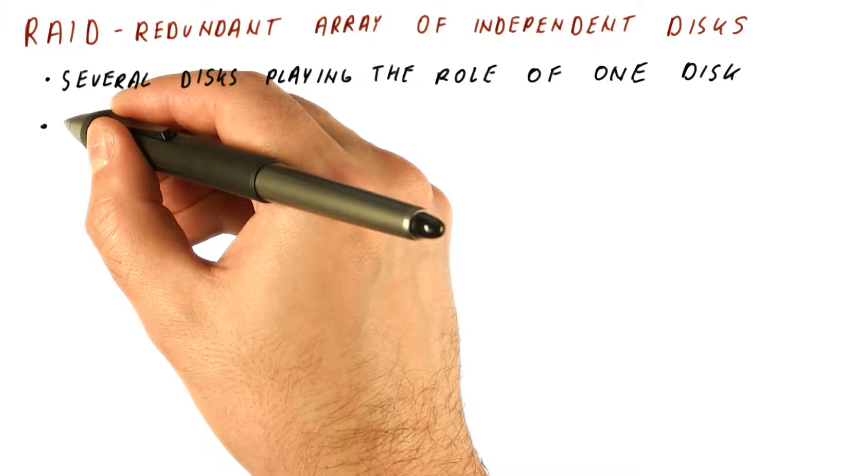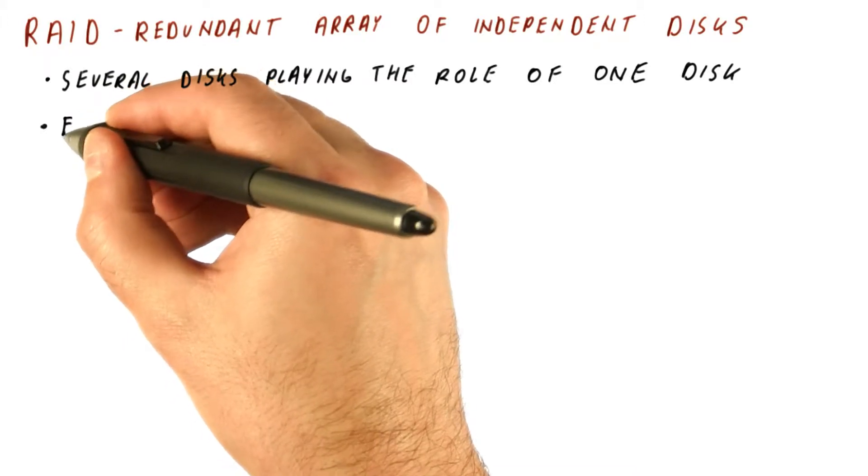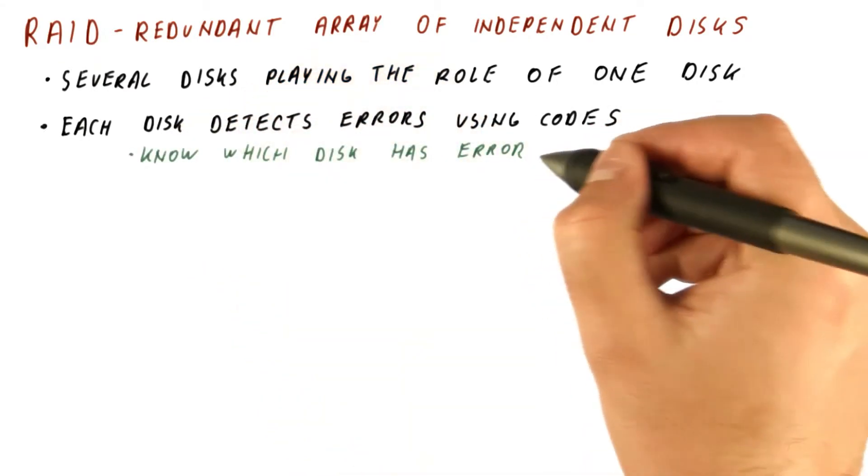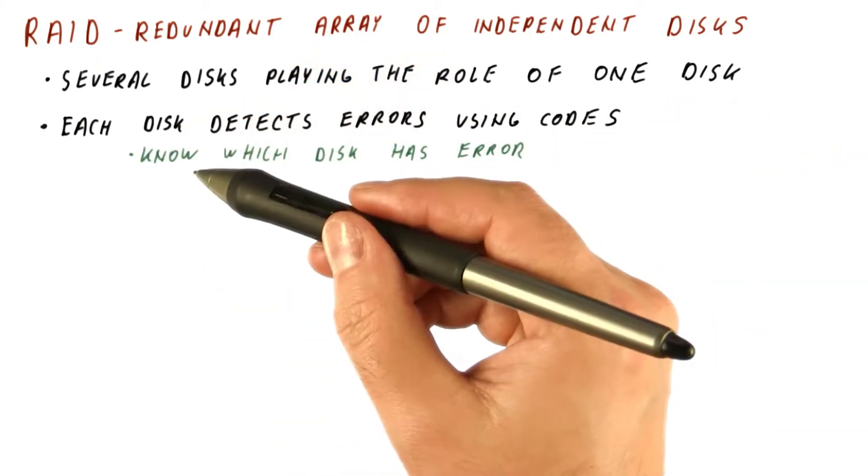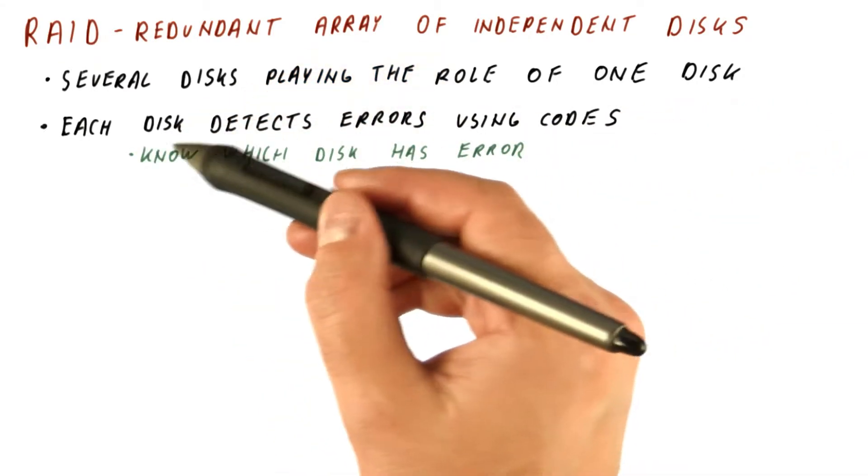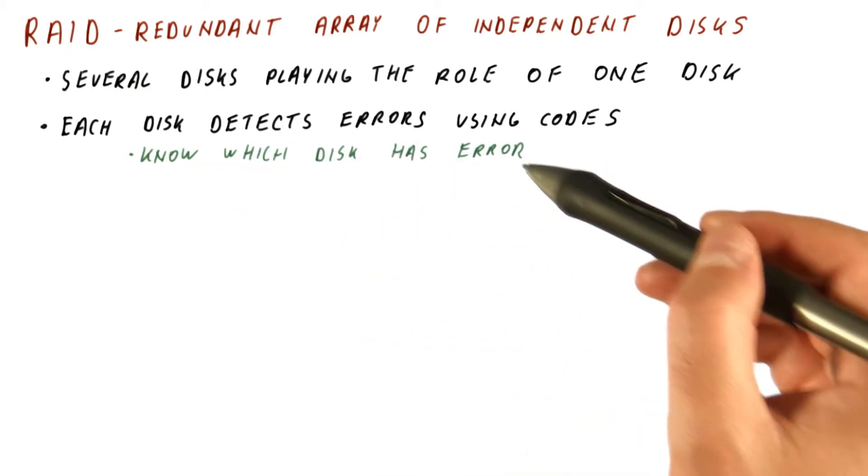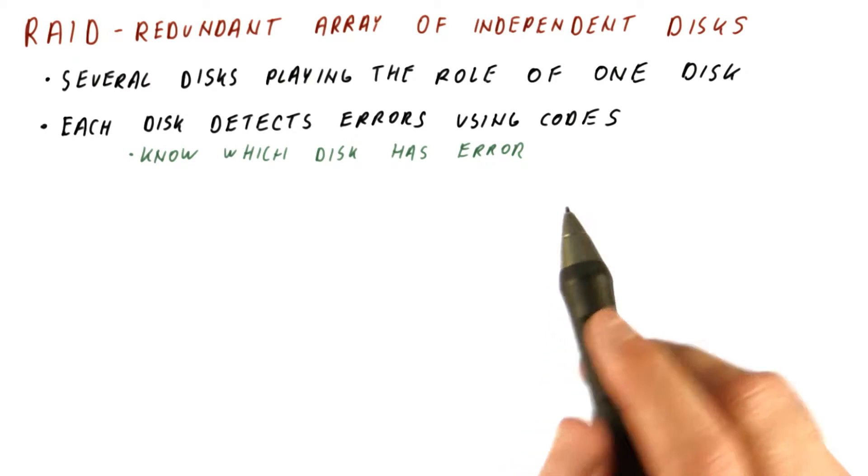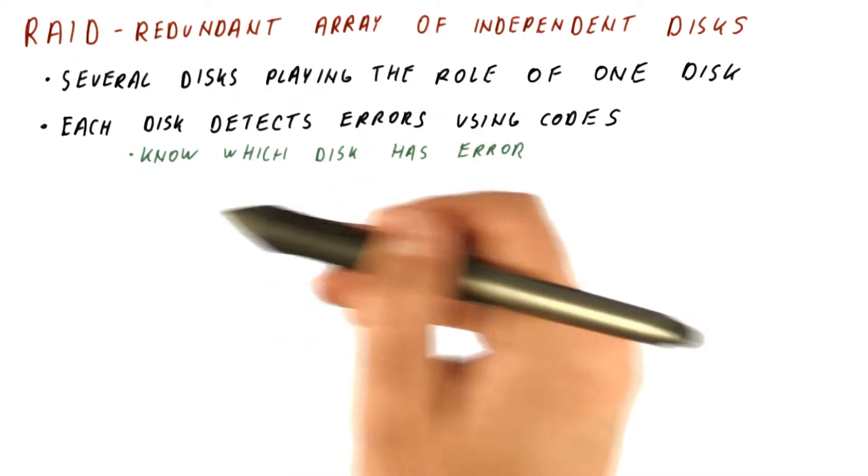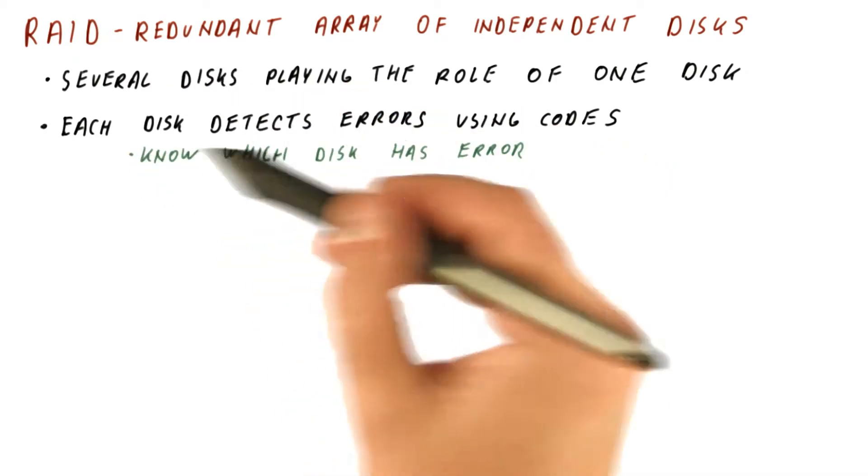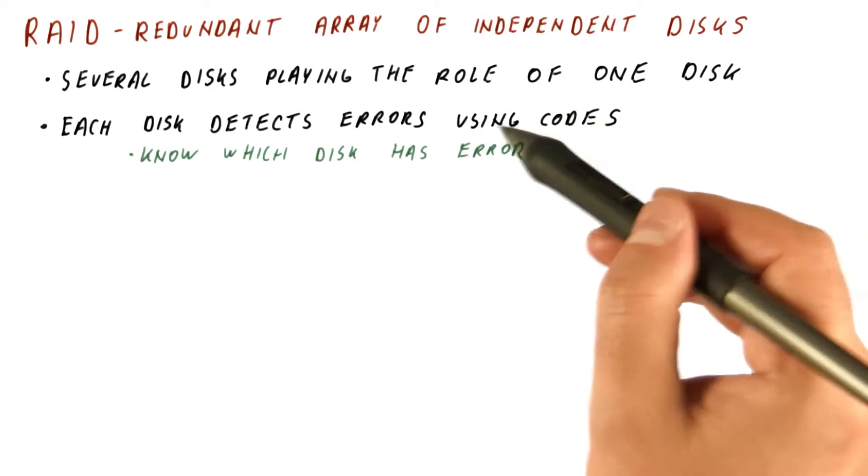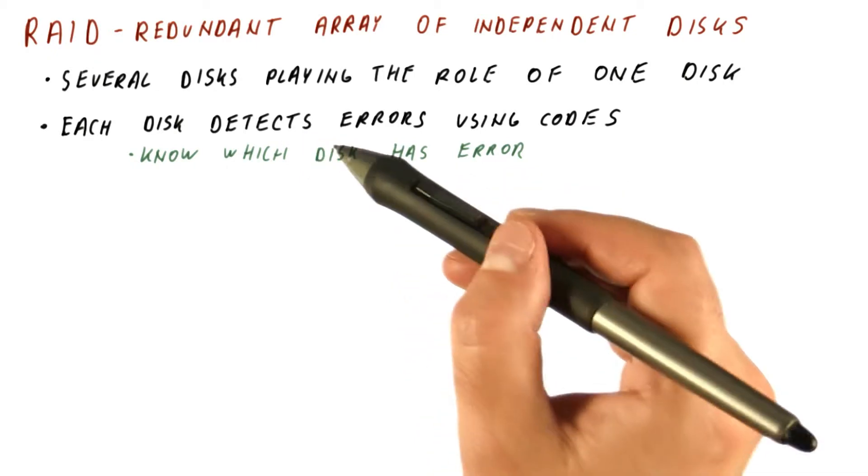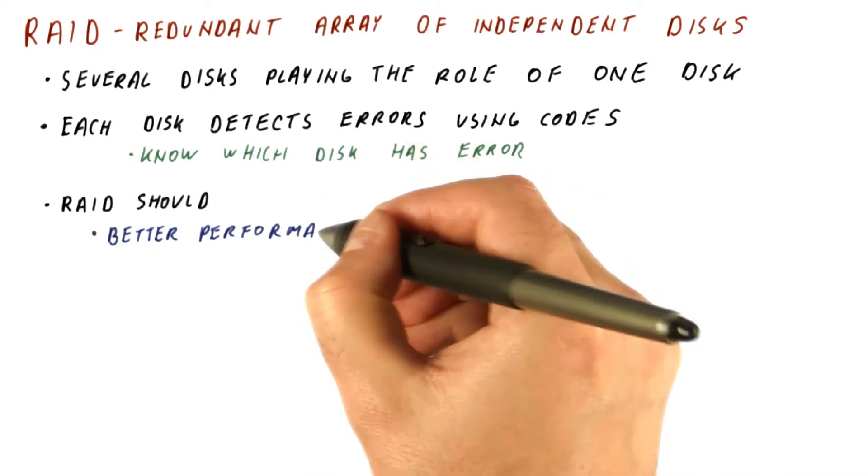Before we go into explaining RAID, it's important to note that each of the disks is still detecting errors using codes. So each of the disks will know whether it has an error, and in the overall RAID scheme we will know which of the disks have an error. We don't have to have RAID figure that out because each of the disks still has a code at each sector that is capable of both fixing some errors and detecting even more errors on that sector.